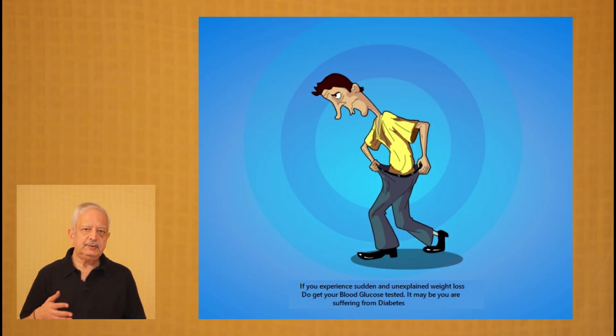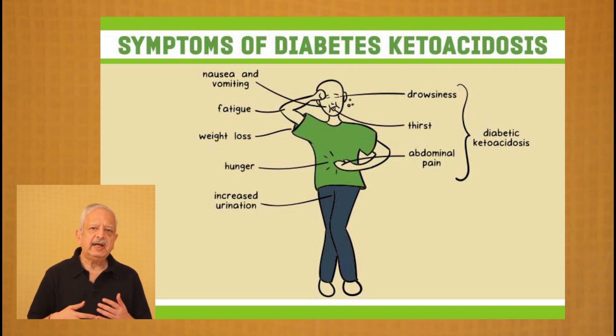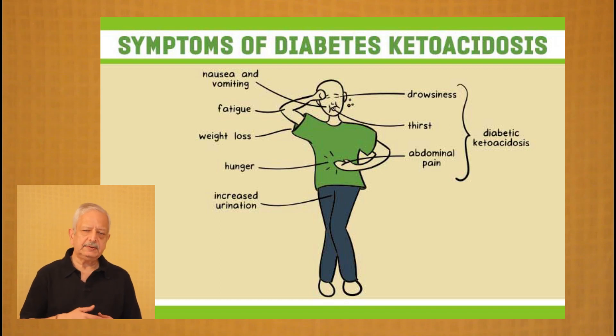In such cases you may experience a sudden and unexplained weight loss — so if that is happening to you, please get your blood glucose numbers checked, as you may be suffering from diabetes. Further, if the pancreas have completely given up and are unable to produce any insulin at all — a situation mostly faced by Type 1 diabetics and very rarely by Type 2 — the body's ketones start to build up and the cascading effect can go out of control, leading to diabetic ketoacidosis or DKA.